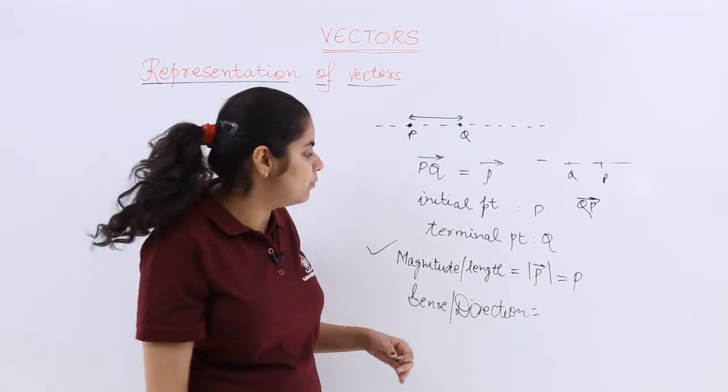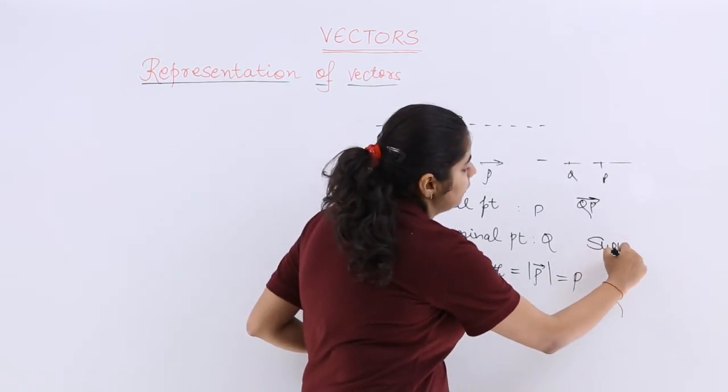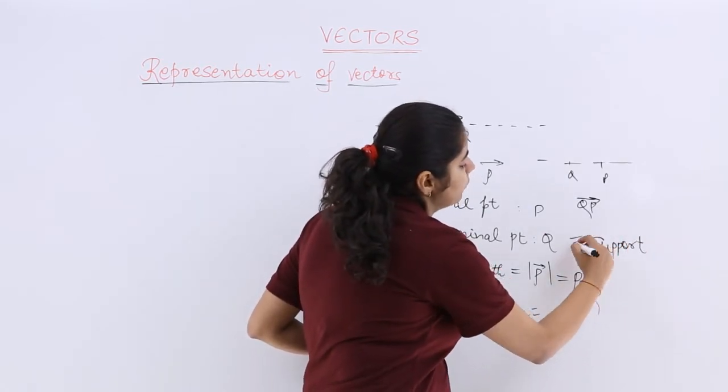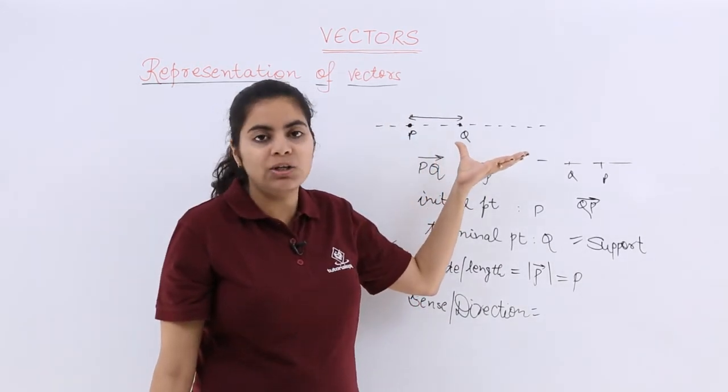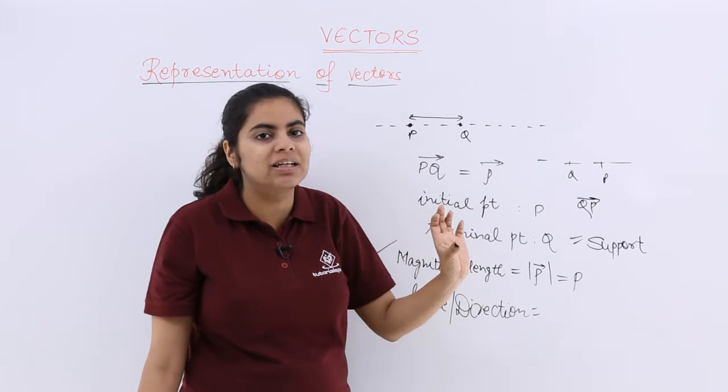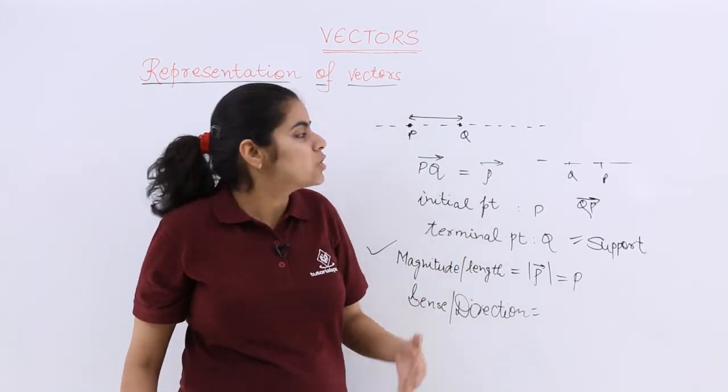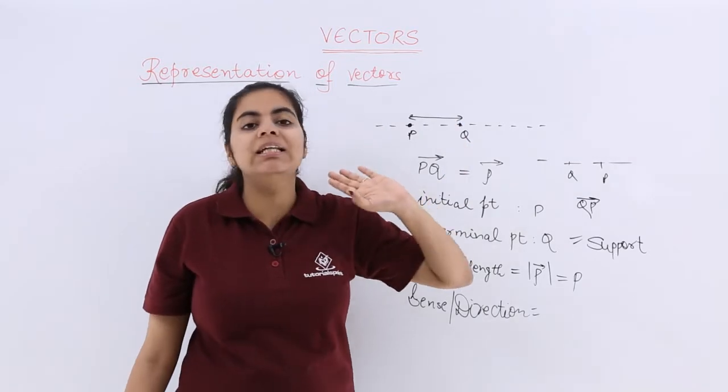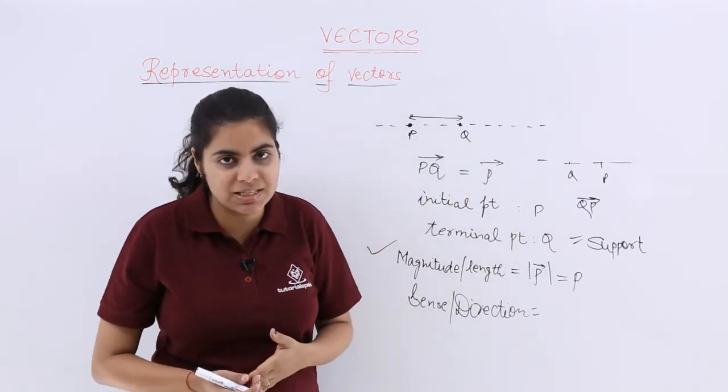Last but not the least - though not very important, which is why I left it for last - is your support. What is support? It is the unlimited line on which this given vector or the directed line segment is a part of. That is known as support.